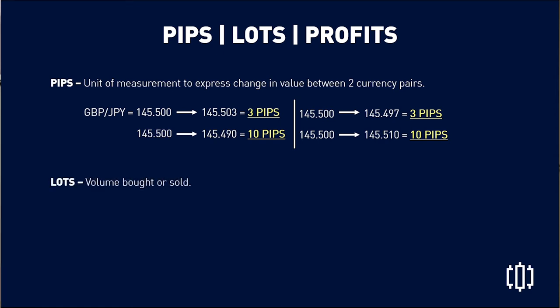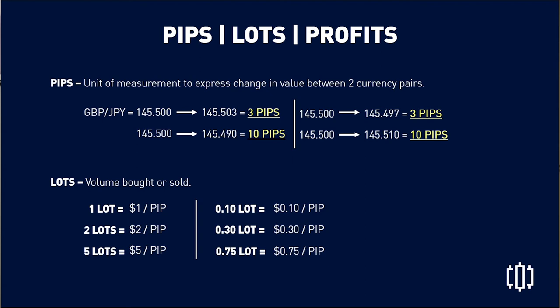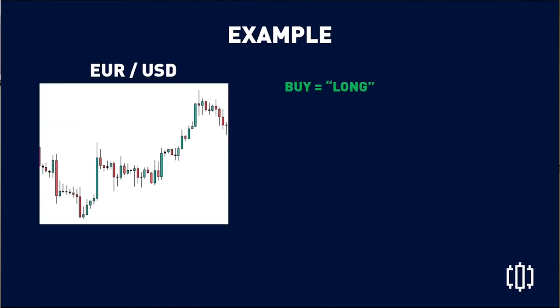Next we have lots — this is the volume bought or sold. Basically, it's what you're willing to risk and what you're willing to gain or lose. Every lot has a designated value per pip. One lot equals $1 per pip, two lots equals $2 per pip, five lots equals $5 per pip, and so on. You can also use smaller sizes like 0.10 or 0.30 lots if you have a small account. It all depends on your strategy and risk management. Lot size is crucial — many people lose money because of greed pushing them to trade larger sizes.